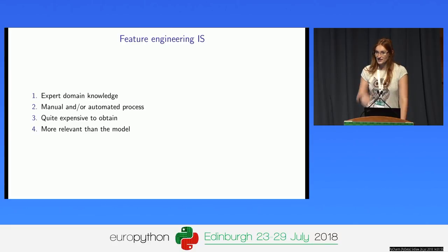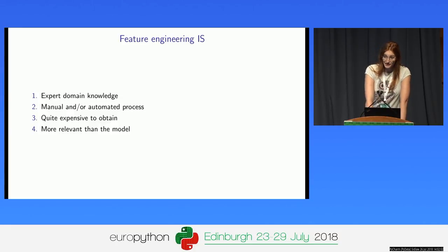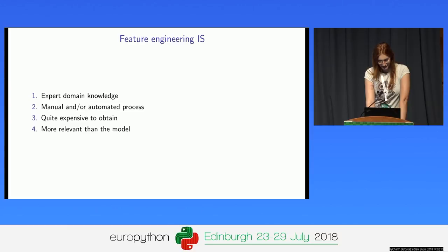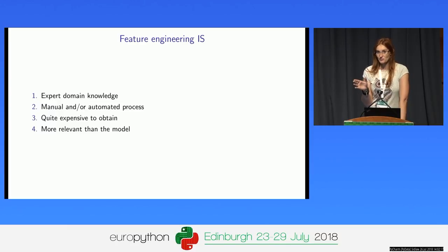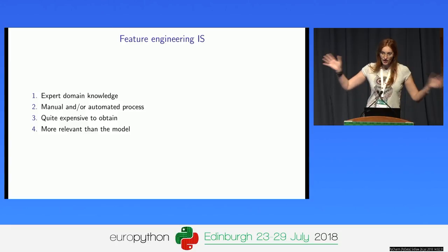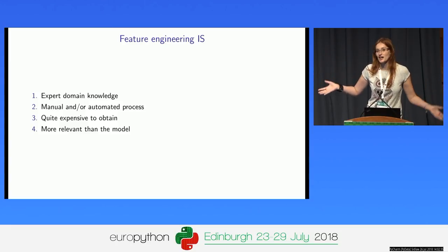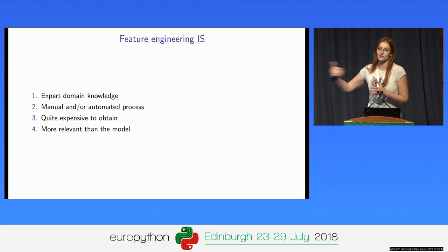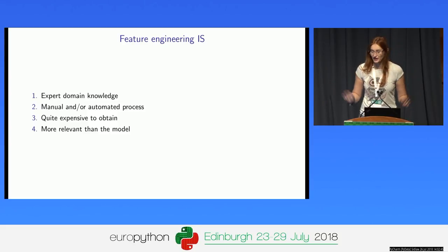Feature engineering requires expert domain knowledge — someone who drives a taxi probably knows a bit more about that industry than a college student. This process can be both automated and manual. I won't talk about automated approaches here; those cover feature learning, knowledge transfer, or Python tools that concatenate many tables and run automatic functions to create new features as transformations of existing columns. I'll talk explicitly about manual creation.